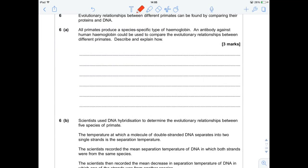Hi guys and welcome to question 6 of June 2014's Unit 2 biology paper. This is an evolutionary relationship question and looking at how we can use technology to compare proteins and DNA.